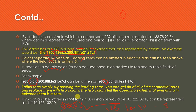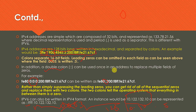IPv4 addresses can also be represented in IPv6 format. For example, the address 10.122.132.10 can be written as double colon followed by FFFF colon followed by the original IPv4 address — making it a valid IPv6 representation.